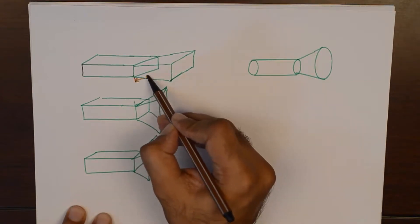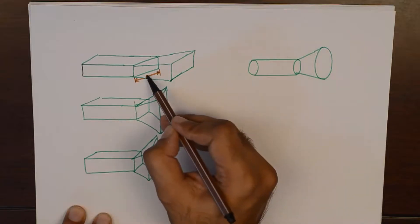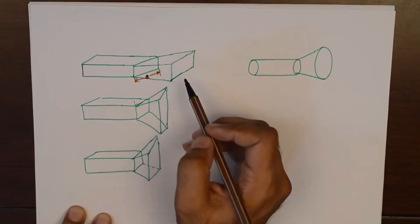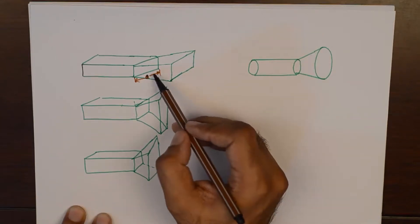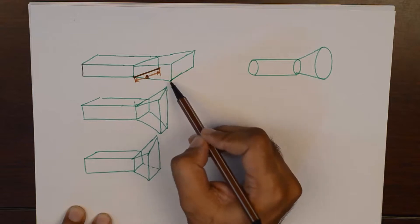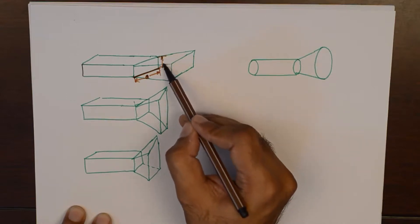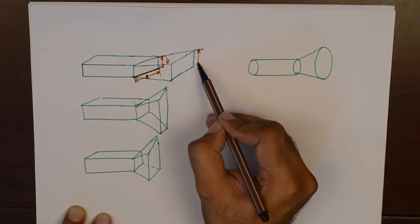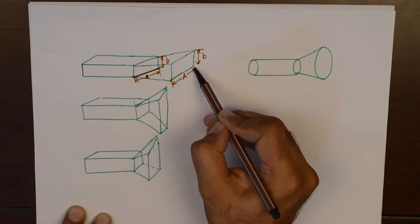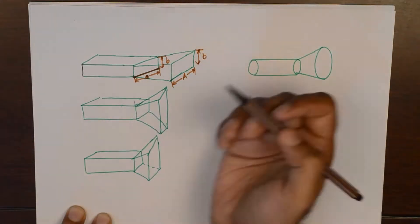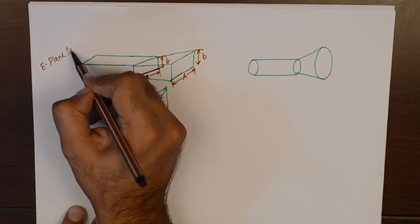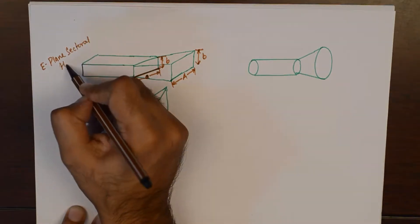This dimension is A and I am not sure if you can correctly visualize this 3D image which is not really well made. But, this smaller dimension is A and if I am just increasing this smaller dimension keeping the other dimension B constant, B is still B here after flaring. But, A has become A. Now, this type of flaring results in an antenna which is known as E plane sectoral horn.